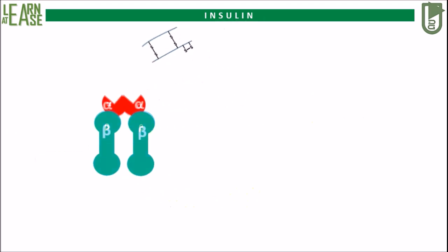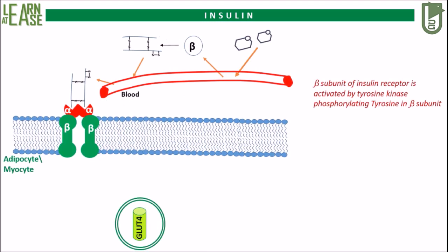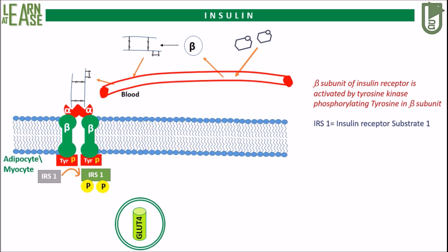Let's get back to the original animation. The phosphotyrosine will drive the phosphorylation of insulin receptor substrate 1. Once IRS1 is activated in this way, an enzyme, phosphatidylinositol 3-kinase, will bind to it and get activated.